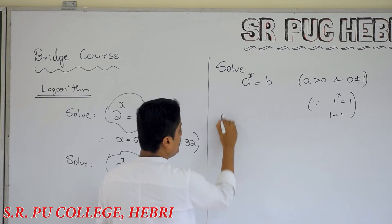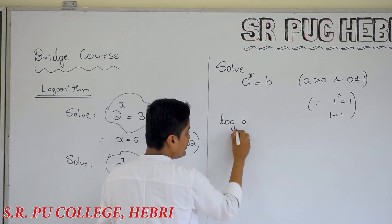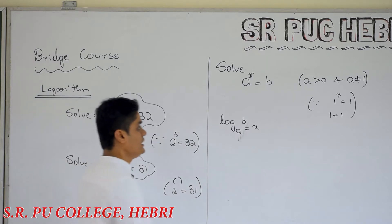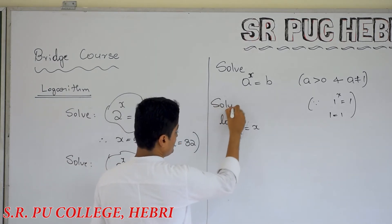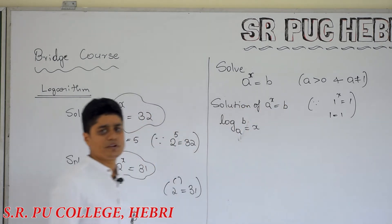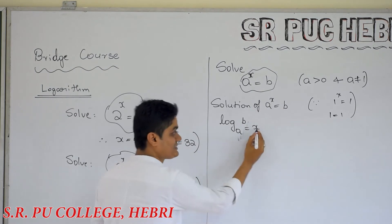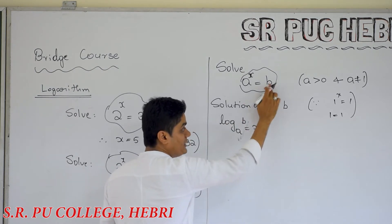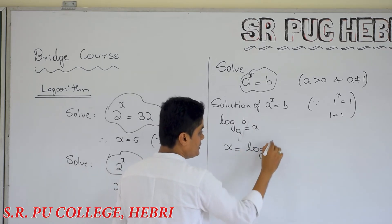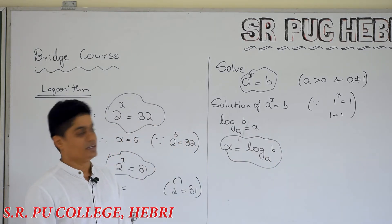So logarithm is nothing but: log of b to the base a is equal to x. Logarithm is nothing but the solution of a power x is equal to b. The value of x which satisfies the equation — the solution is always for x. So x is equal to log of b to the base a. That is how logarithm is introduced in mathematics. Why is it required? To solve an equation of the form a power x is equal to b.